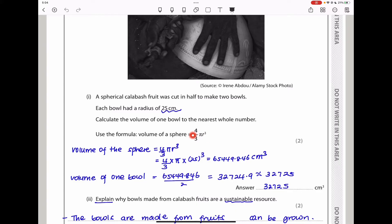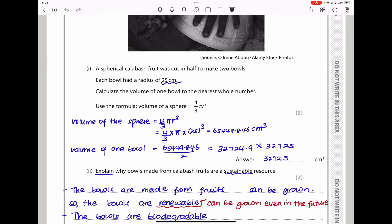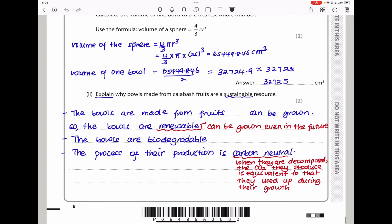Since we are calculating the volume of one bowl, it should be half the volume of the sphere. Volume of a sphere is 4/3 π r³. The radius is 25, so I put it into the equation and fed everything into my calculator. We have to divide by two to get the volume of one bowl. The answer is to the nearest whole number, so rounding off, I got 32,725 centimeters cubed.